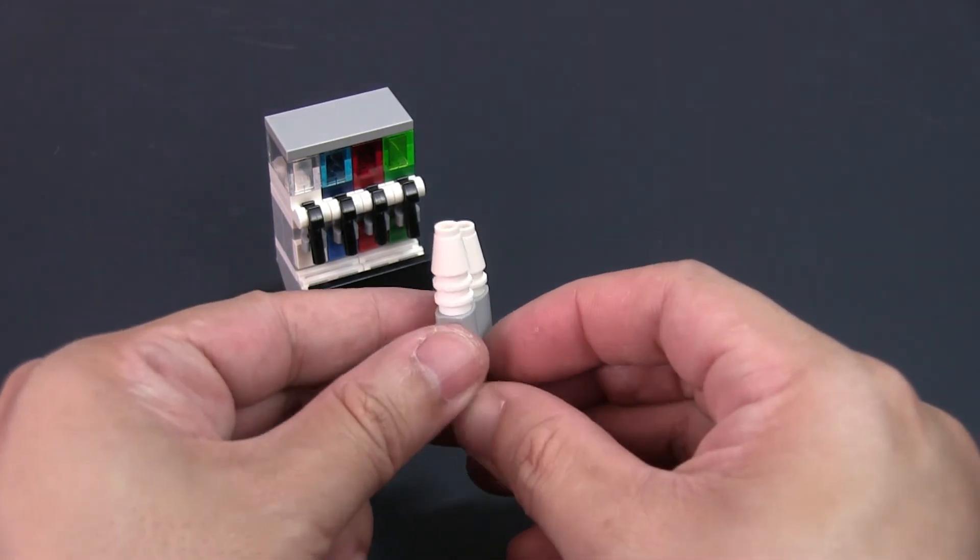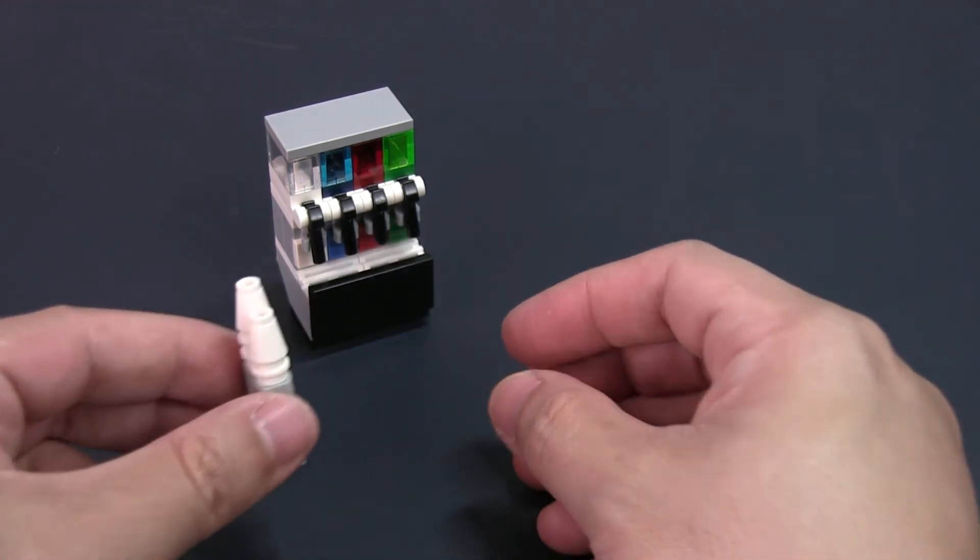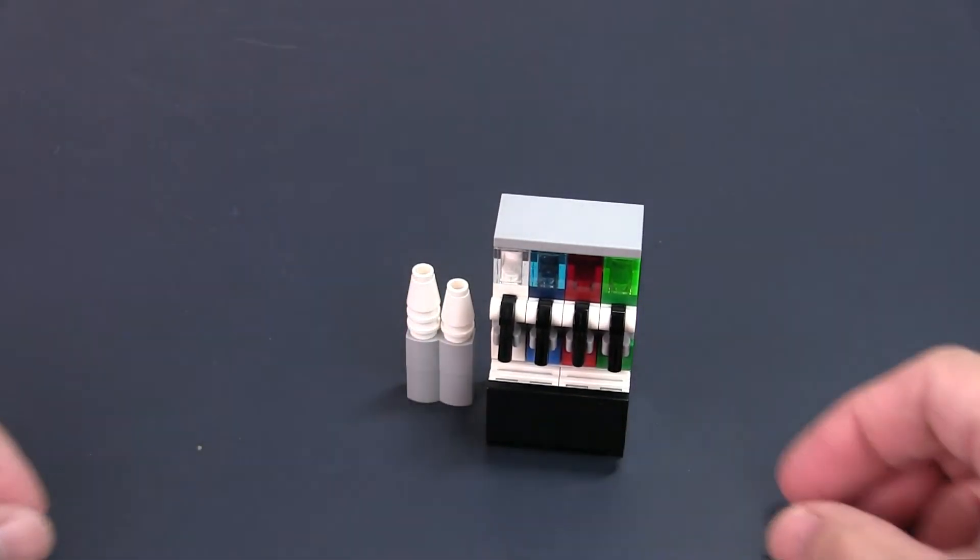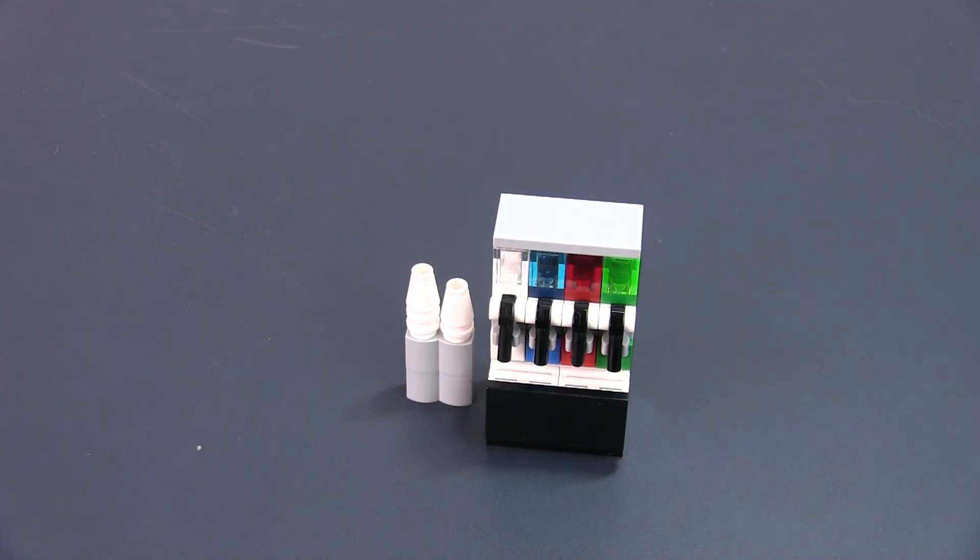This simulates a cup dispenser. I chose to make it a separate unit so that you can decide to place it in any orientation you want depending on the space where you place the soda fountain.